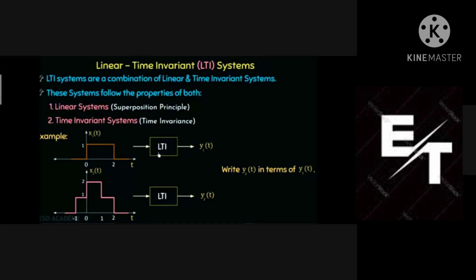A linear system is one that obeys the superposition principle as well as the homogeneity principle. Homogeneity means: if we multiply the input by some quantity k, then the output is also multiplied by the same k. So multiplying input by k gives output multiplied by k — that is the homogeneity principle.